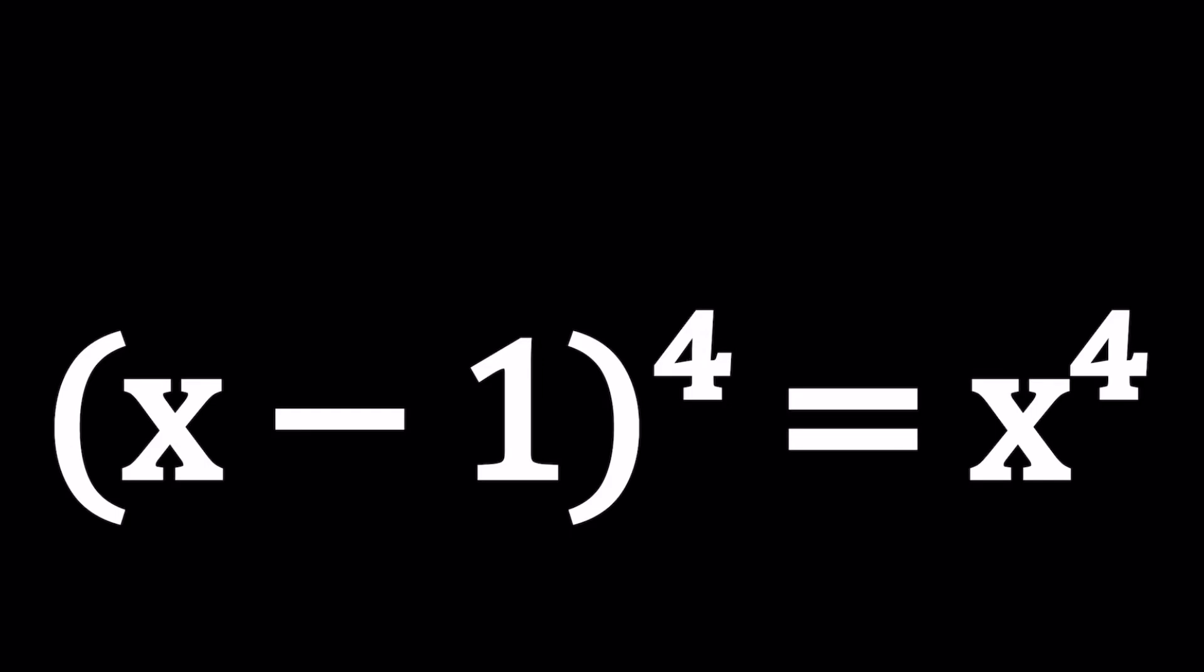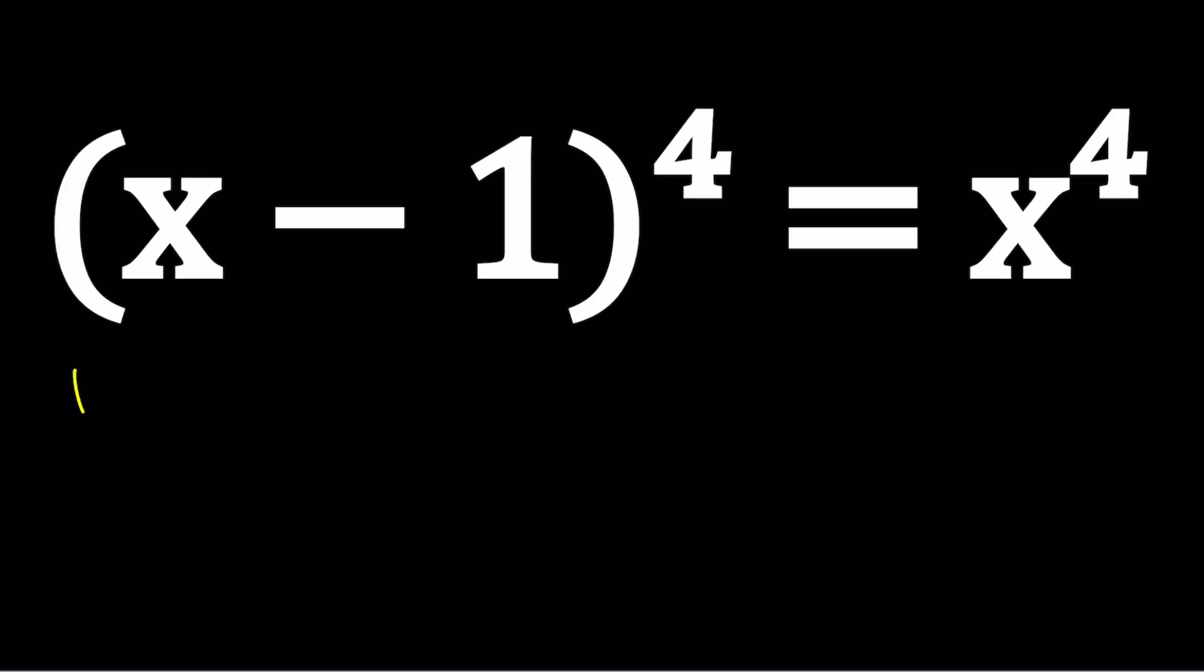Hello everyone, in this video we're going to be solving a nice polynomial equation: (x-1)^4 = x^4, solving for x values. Now this might look like a quartic equation because of the fourth powers, but this is not a quartic, it is actually a cubic equation because x^4, as you'll see in a bit, will cancel out. I'll be presenting two methods and let's start with the first one.